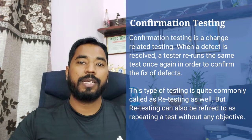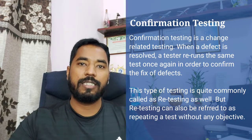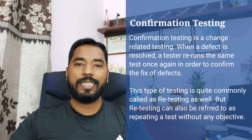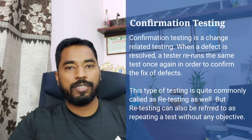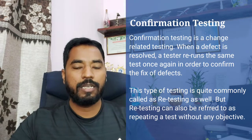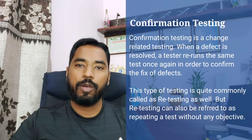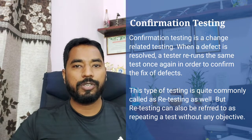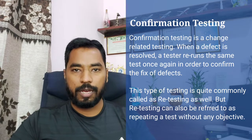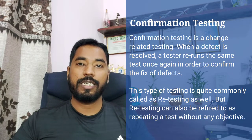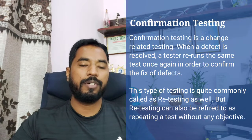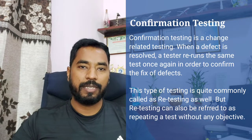Retesting, as per many other organizations, is just about repeating a particular test with the intention of gaining confidence or making sure that executions were up to the mark. But confirmation testing is mainly to confirm the fix — you repeat the test case again, but this time with the objective of making sure the defect has been resolved.